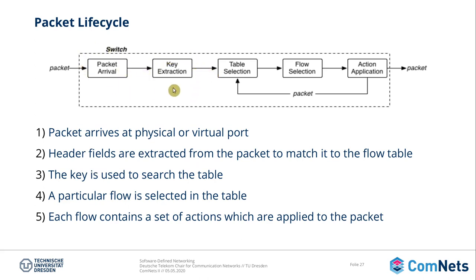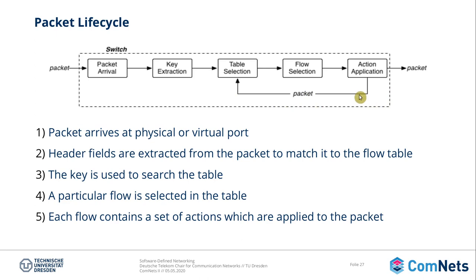A packet arrives, the header is extracted, and then we have a lookup table with multiple flow entries. Depending on the key or the header, a particular flow is selected. For example, we look at the MAC addresses — we have a certain source MAC address and a certain destination MAC address — and according to the destination MAC address we know which port the receiver is on, and therefore we perform a certain action. Each flow contains a set of actions which are then applied to the packet.